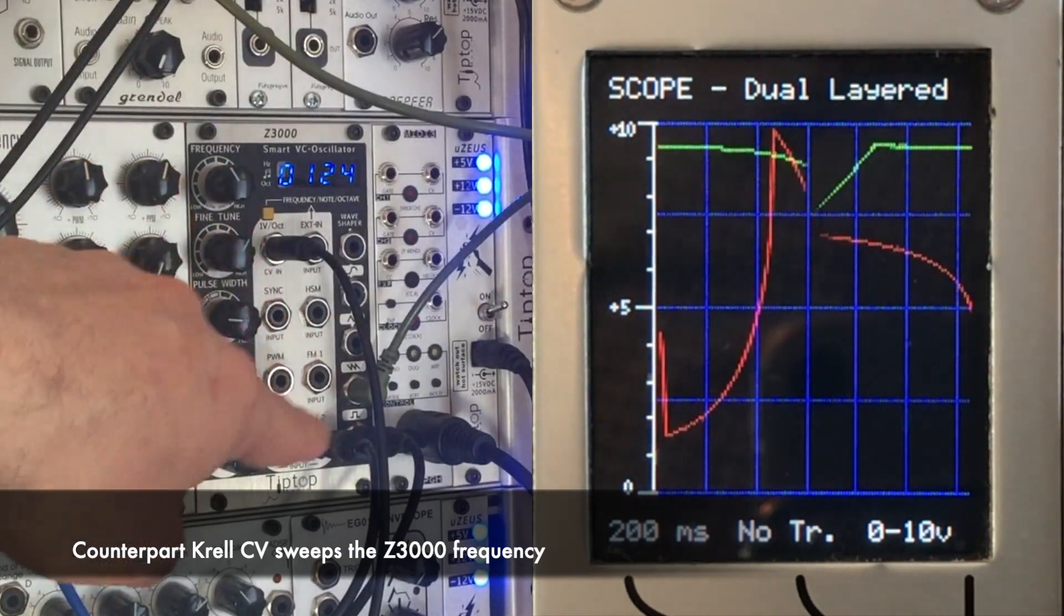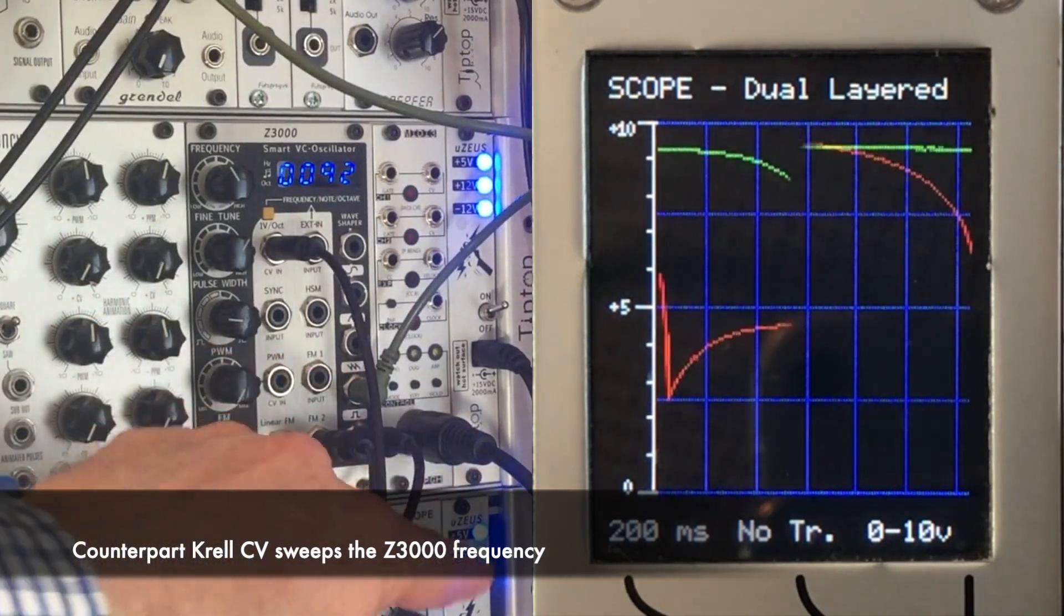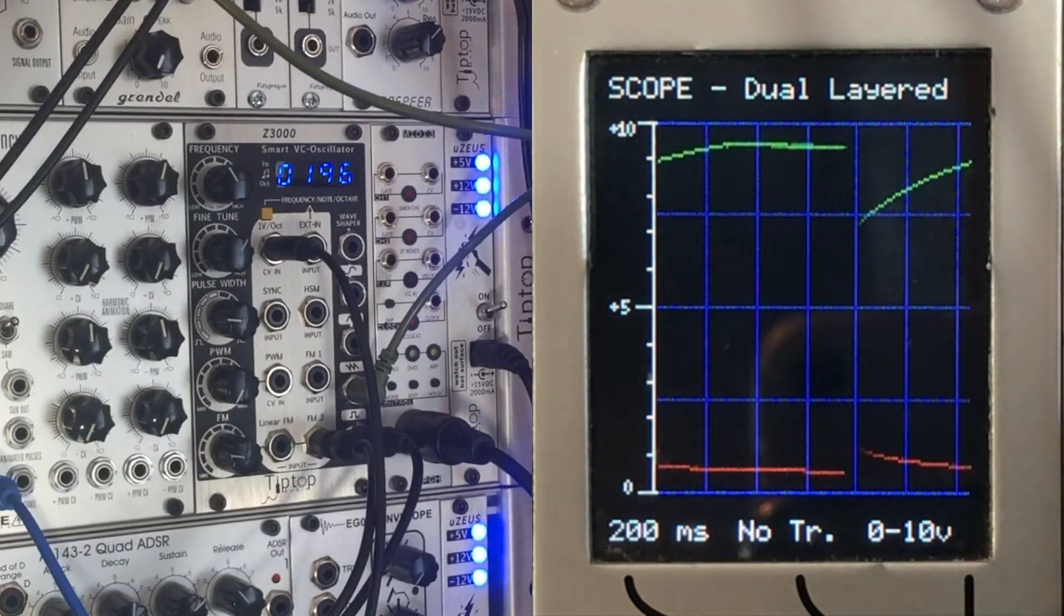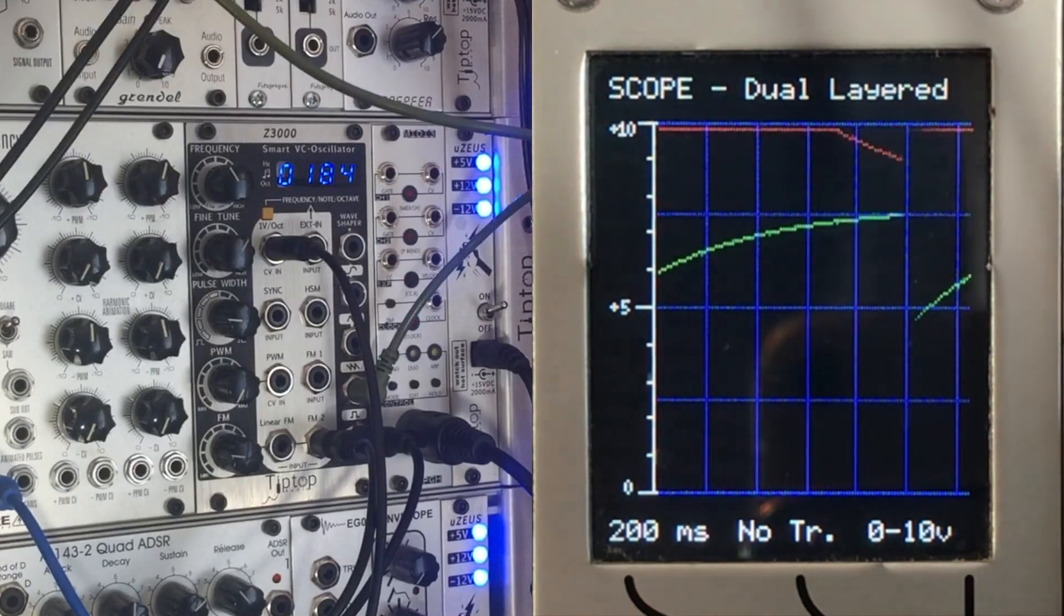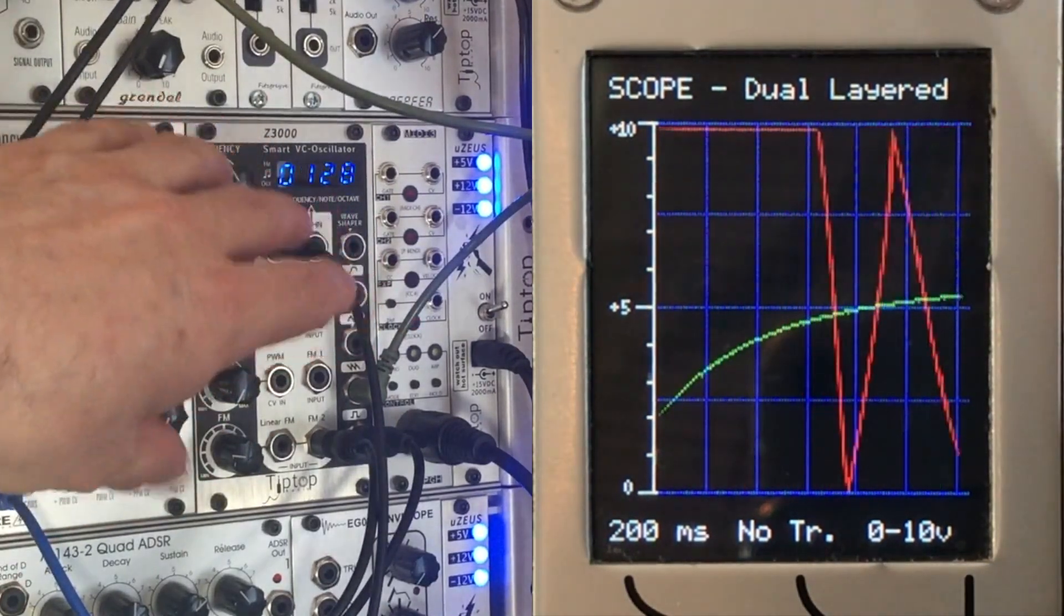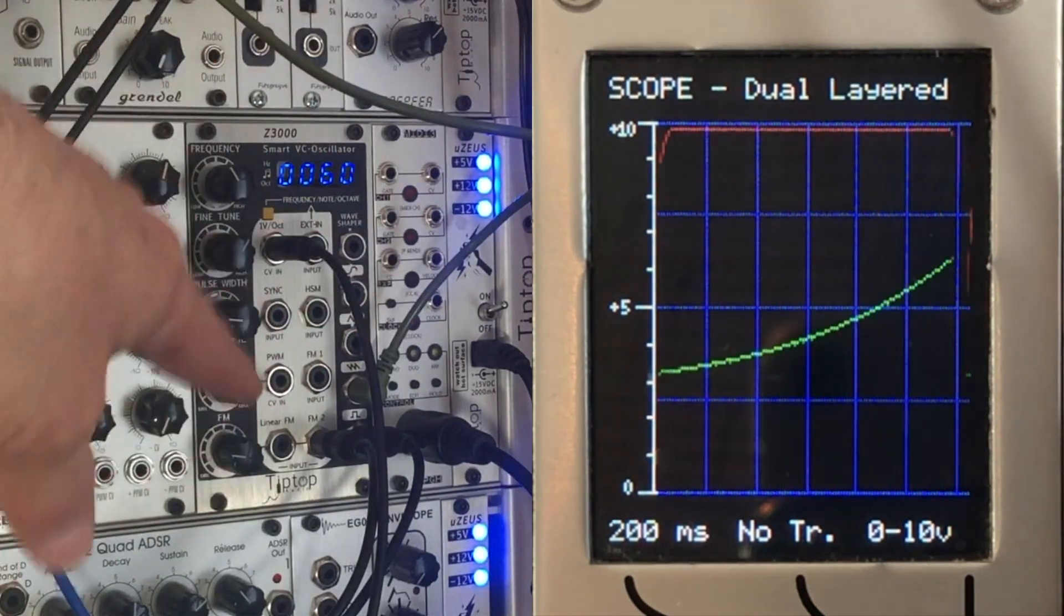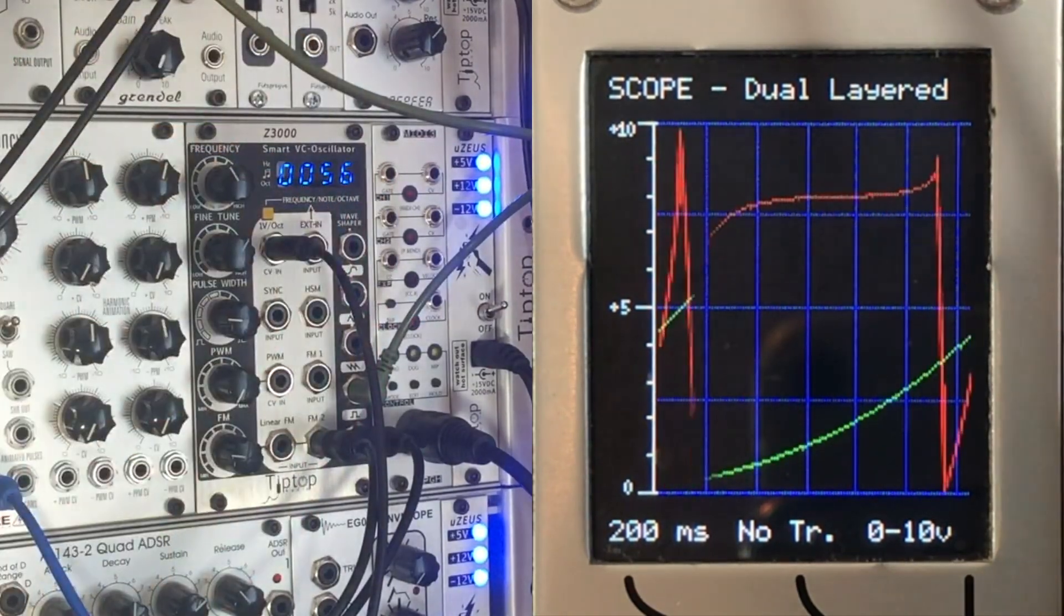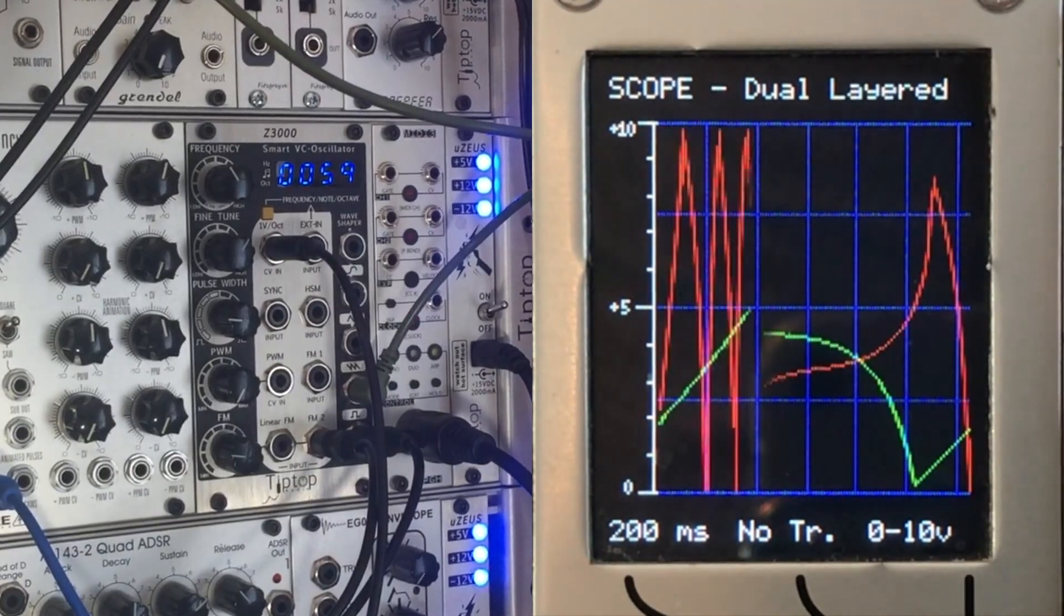I'm coming out of that oscillator out of its pulse output and I'm running a pulse wave over into Elements, running into Elements' extension input. So we're not really hearing the Z3000. What it's doing is I'm using its sweeping pulse oscillations as the exciter for Elements, and we'll take a look at what Elements is doing.